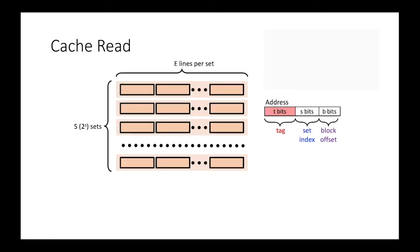Let's talk about how cache organization comes into play when accessing it. When a CPU issues a memory address, that address is decomposed into three different fields. From the least significant bit, a certain number of bits are the block offset, the next certain number of bits are the set index bits, and the remaining bits are the tag bits. The number of bits for each field is determined by the cache configuration and size.